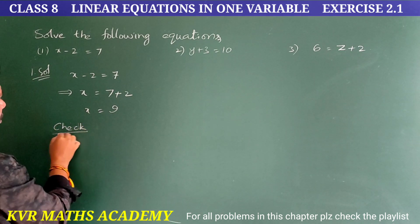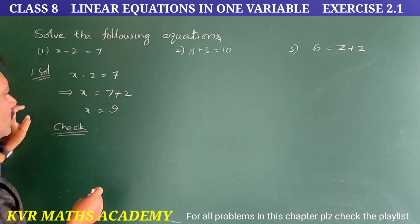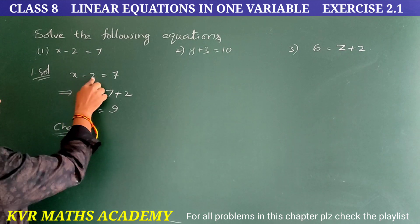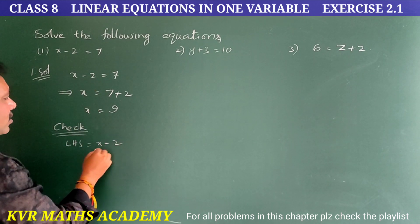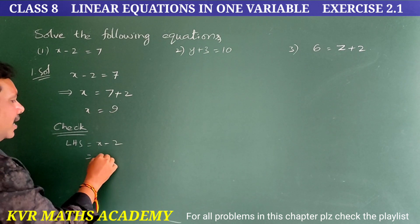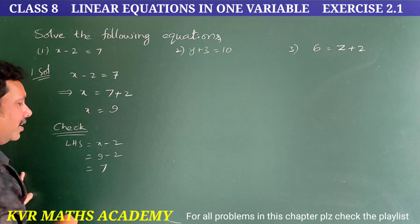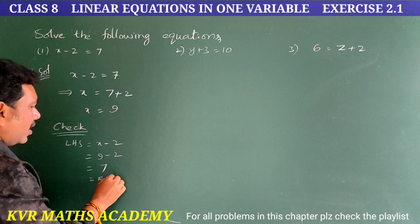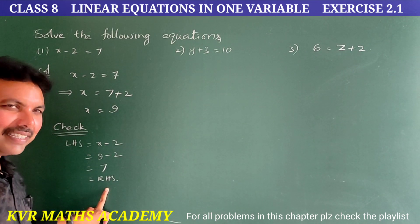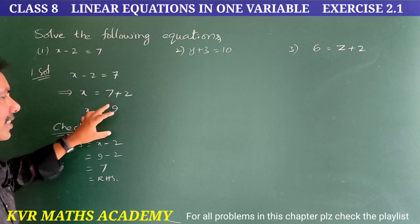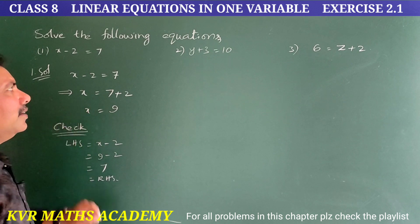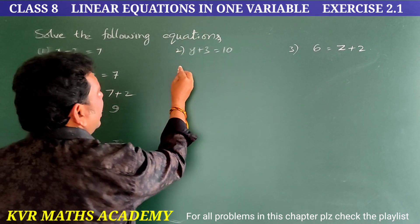Check: LHS is equal to x minus 2. Substituting x equals 9, we get 9 minus 2 equals 7, which equals RHS. So LHS equals RHS — the value x equals 9 is correct.